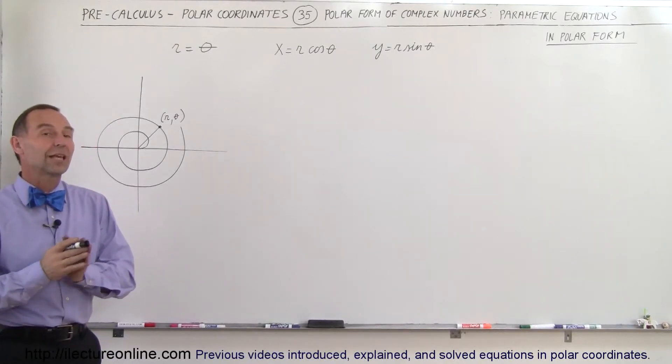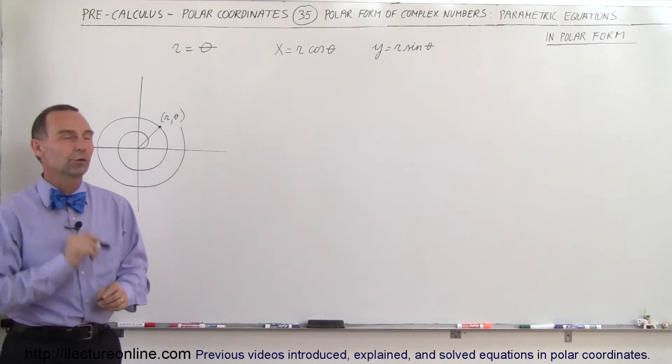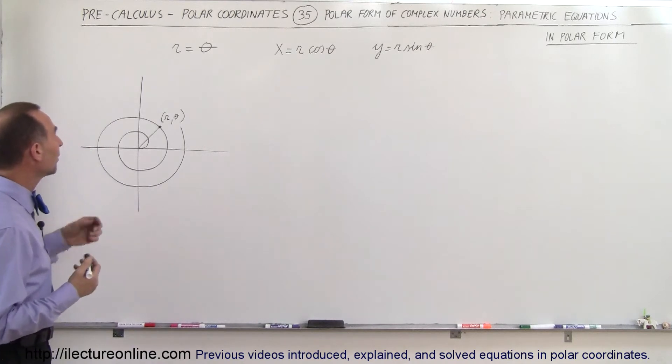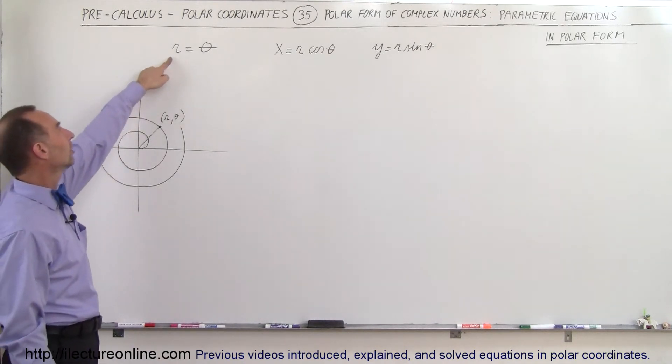Hey, welcome to ElectronLine and now we're going to take a look at parametric equations in polar form. So first of all we come up with something we're familiar with, r is equal to theta.